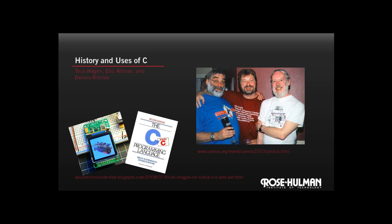C has been the main development language for Unix operating systems and utilities for a couple of decades. In fact, our Python interpreter was written in C. C has been used for serious coding, along with other languages, on just about every development platform. C is often used for embedded software systems, and is also experiencing a resurgence for parallel programming on graphics cards using a library called OpenCL.